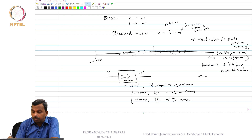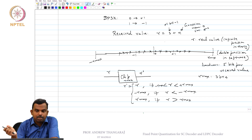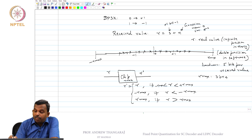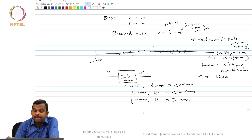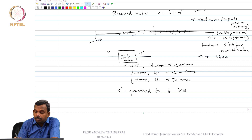A typical value for R_max could be 3 or 4 in the BPSK case — that is fine enough, since the received symbol is plus 1 or minus 1 plus noise. Once you decide on R_max, the values in between have to be represented by just 5 bits. Let's take 6 bits for convenience — 1 bit shows the sign, and the remaining 5 bits represent the magnitude.